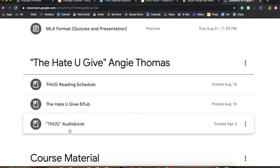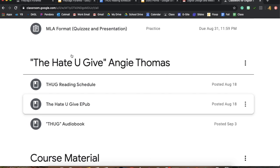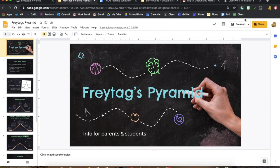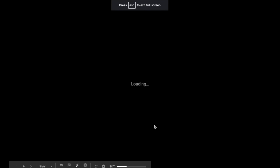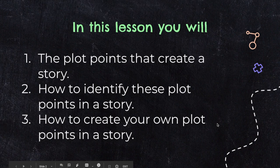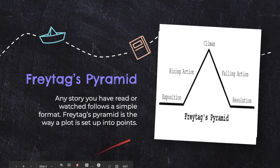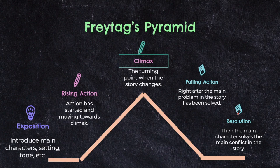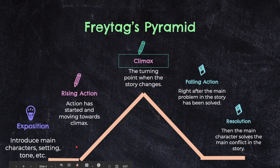The next thing for you guys is Freytag's Pyramid, which just has to do with plot points. You guys have all talked about plot points before, which are essentially where you have your beginning or your exposition all the way through your climax and your resolution. Here's what that breakdown is: first you start with your exposition, where you introduce your main characters, setting, and tone — that's usually where we start off in the story.